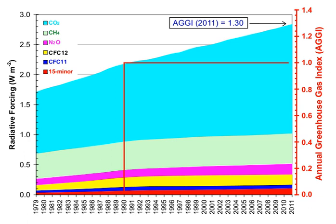Human activities since the beginning of the Industrial Revolution around 1750 have produced a 45% increase in the atmospheric concentration of carbon dioxide, from 280 ppm in 1750 to 406 ppm in early 2017. This increase has occurred despite the uptake of more than half of the emissions by various natural sinks involved in the carbon cycle.